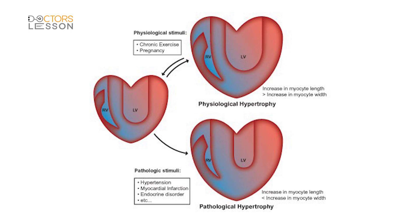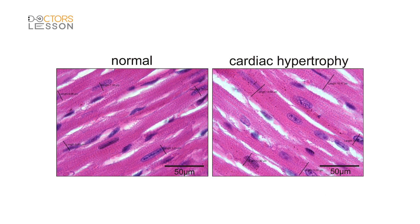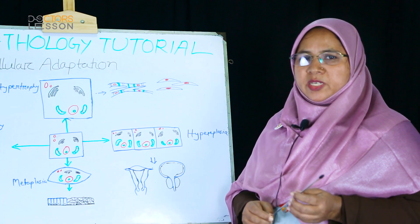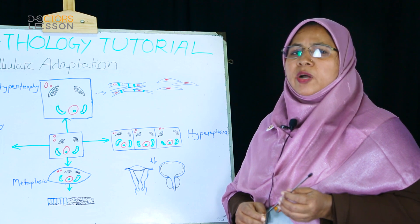Cardiac muscle shows both physiological and pathological hypertrophy. Regular exercise and pregnancy cause physiological hypertrophy of cardiac muscle, illustrated by increased length of cardiac muscle fibers, while cardiac functions remain within normal limits. Pathological hypertrophy of cardiac muscle is caused by volume load due to valvular disorders and pressure load due to hypertension. In these cases, cardiac muscle fibers increase more in width than length, and cardiac functions are abnormal. In some neuropathic or myopathic disorders, skeletal muscles also show hypertrophic changes.